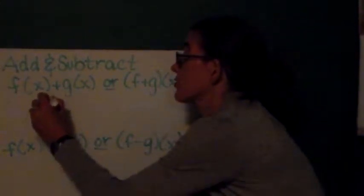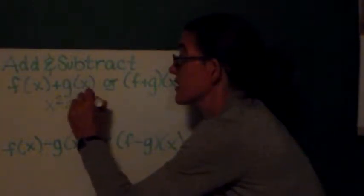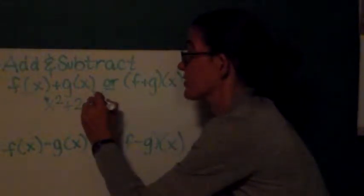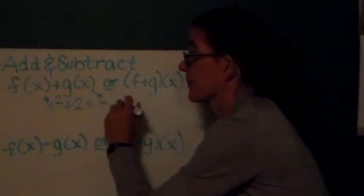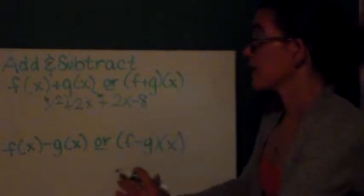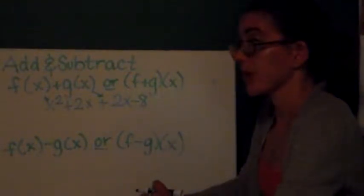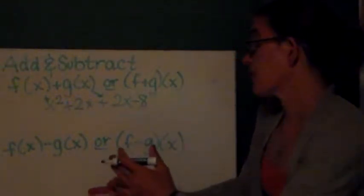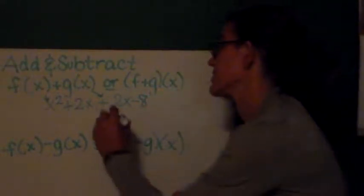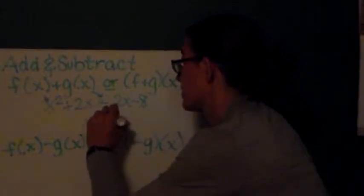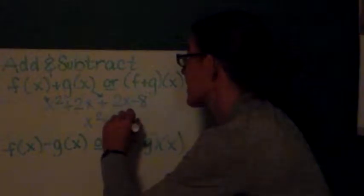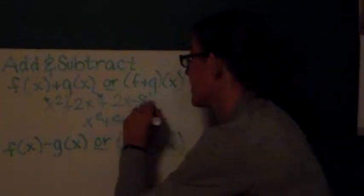In order to do this, I'm just going to write the functions x² + 2x. There's my f(x) function. And my g(x) function. Now, here I'm not going to write them in parentheses, although I certainly could. The only thing that I have to do here is to combine like terms. It's just that easy.